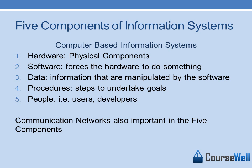These are the five components of a computer-based information system. First, you must have the hardware — the physical components such as computers, printers, and monitors. Second is software, which forces the hardware to do something, such as operating systems.